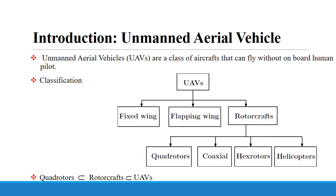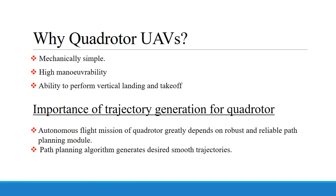The research interest is in quadrotors, which belong to the rotorcraft class of unmanned aircraft. Why quadrotors over other rotorcraft? Because they are mechanically simple, have the ability to perform vertical landing and takeoff, and have high maneuverability. These features make quadrotors more interesting than the others.